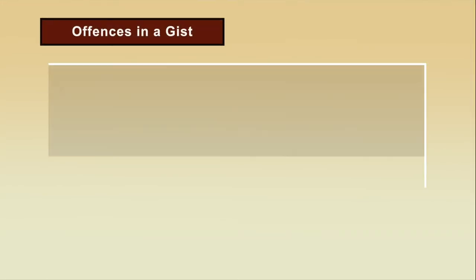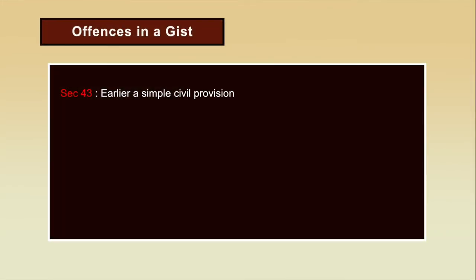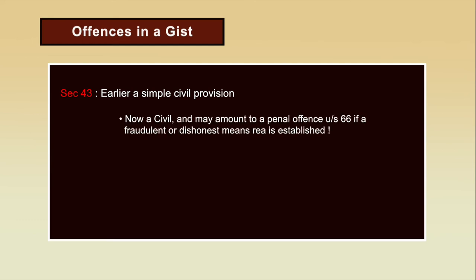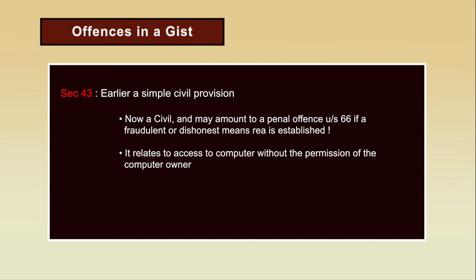Section 43 describes the simple civil provision. A civil offense may amount to a penal offence under section 66 if a fraudulent or dishonest means is established. Section 43 relates to access to a computer without the permission of the computer owner — it penalizes any sort of unauthorized access or assistance. Even trying to access a friend's computer or phone without permission is unauthorized access and is a punishable offence under section 43 of the IT Act.